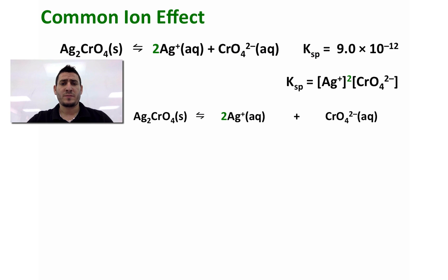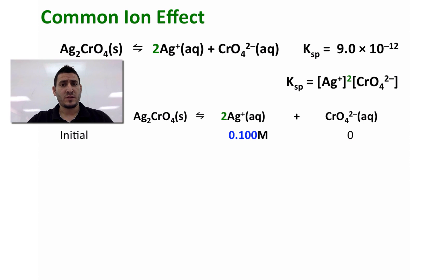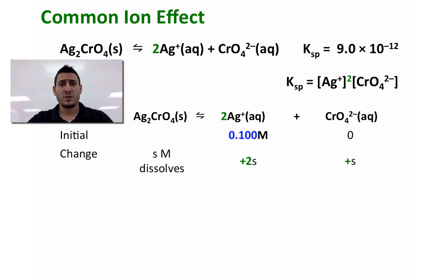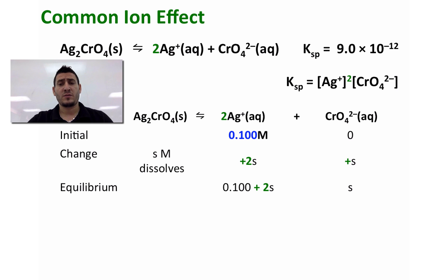If we write out this equilibrium and look at the initial state: initially we had 0.1 molar of Ag⁺ and 0 of chromate. The 0.1 molar of silver is coming from the 0.1 molar silver nitrate solution, so this has to be taken into consideration. When silver chromate dissolves — assuming s molar dissolves — it will form 2s of silver and s of chromate. At equilibrium we will have (0.1 + 2s) molar of silver and s molar of chromate.